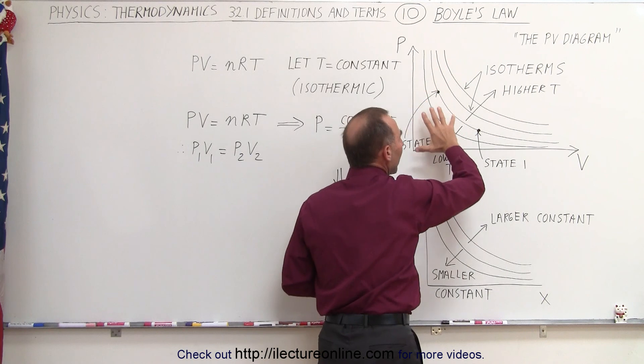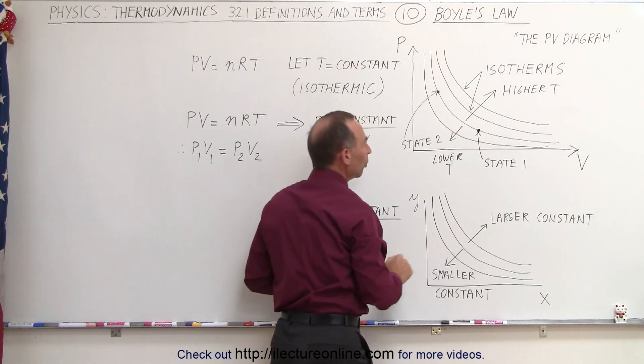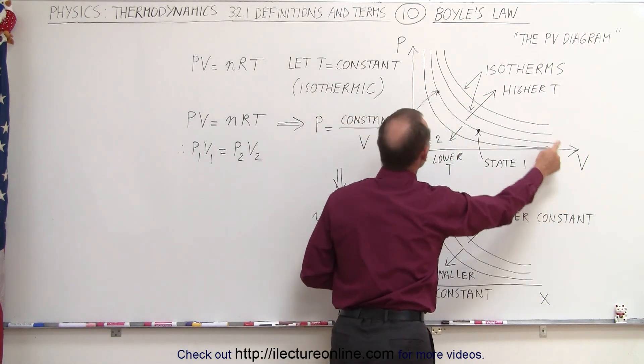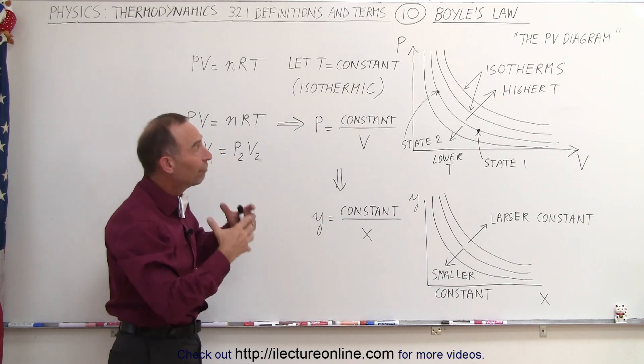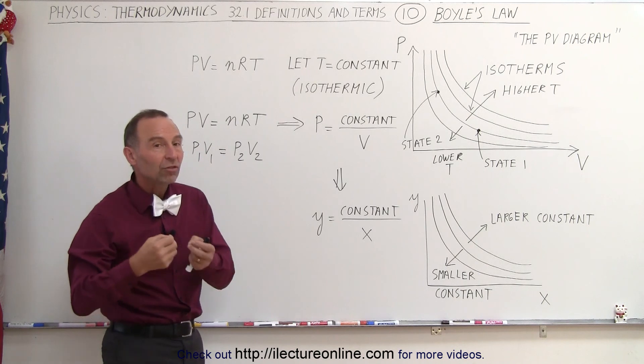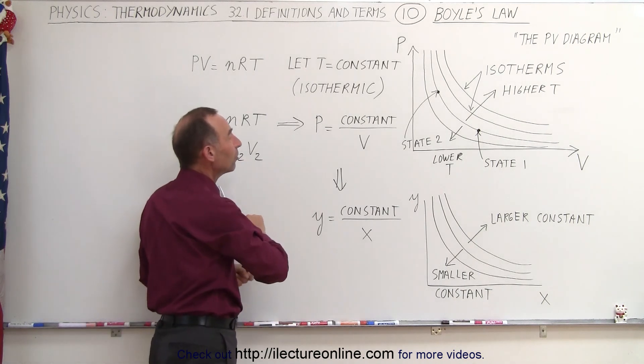So this PV diagram, drawn as such with volume on the horizontal axis and pressure on the vertical axis, represents how it can visually or graphically represent a change of state keeping the temperature constant.